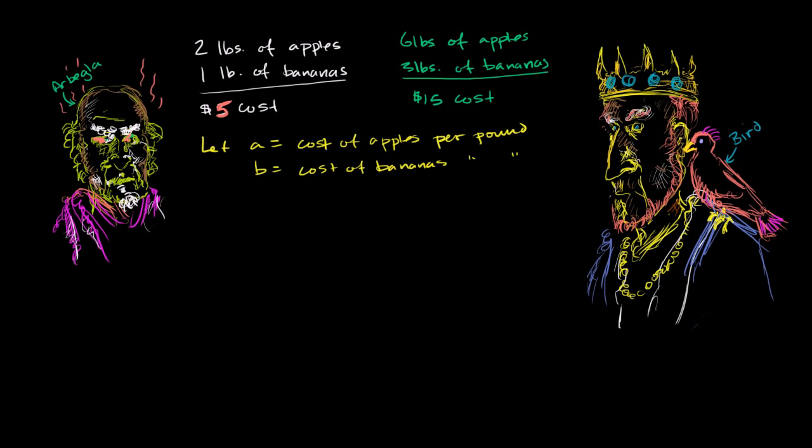So let's break it down using the exact same variables. You say, well, if a is the cost of apples per pound and b is the cost of bananas, this first constraint tells us that two pounds of apples, so two pounds of apples are going to cost 2a, because it's a dollars per pound. And one pound of bananas is going to cost b dollars, because it's one pound times b dollars per pound, is now going to cost $5.